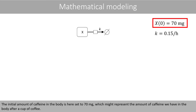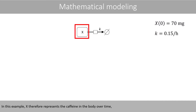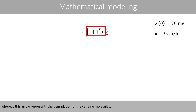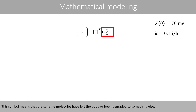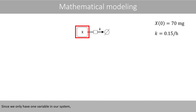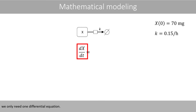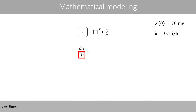The initial amount of caffeine in the body is here set to 70 mg, which might represent the amount of caffeine we have in the body after a cup of coffee. In this example, x represents the caffeine in the body over time, whereas the arrow represents the degradation of the caffeine molecules. This symbol means that the caffeine molecules have left the body or been degraded to something else. Since we only have one variable in our system, we only need one differential equation, which should describe the change of x over time.